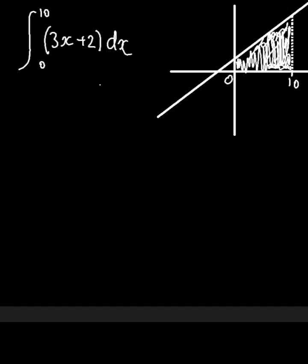We will be integrating the integral 3x plus 2 without an upper or lower limit. To do this, we will add 1 to the power and divide by the new power.